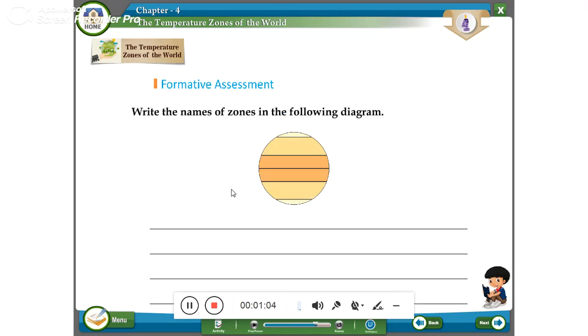Next one, formative assessment. Write the names of the zones in the following diagram. Last, in the previous classes, we have been studied. The last class will label the correct answer.